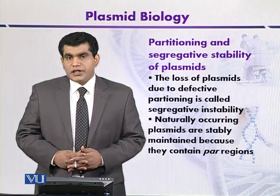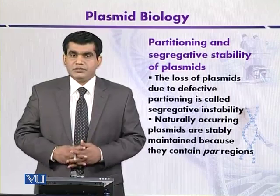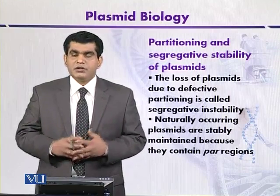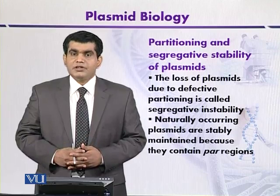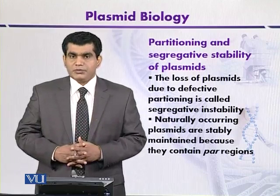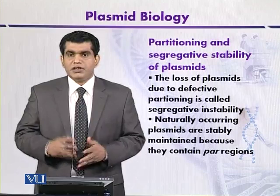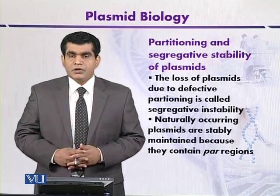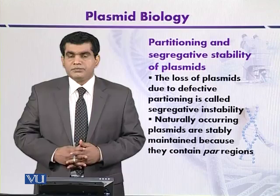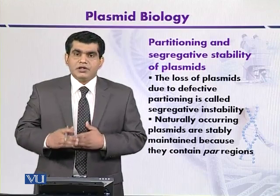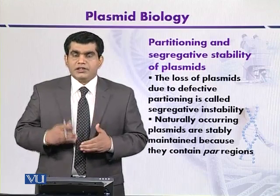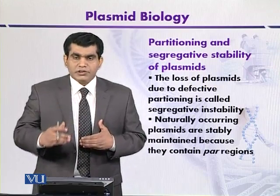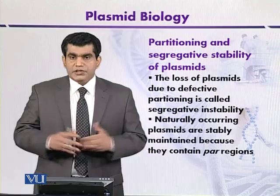The stability and segregation of plasmids from parents to daughter cells is controlled by a region of the plasmid called the partition or par region. If the par region is present, it can control the transfer and segregation of plasmids from parents to daughter cells during cell division.